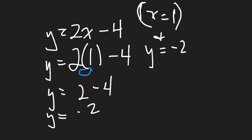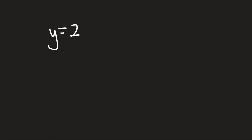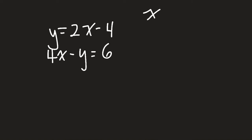If you want to connect it to what we were doing the previous days, the point that would represent this would be (1, negative 2) as the solution — that's our intersection point. The last thing we have to do is a check. We have y equals 2x minus 4 as one equation, and the other was 4x minus y equals 6. We also have x equals 1 and y equals negative 2. Let's check with equation number 1 first.